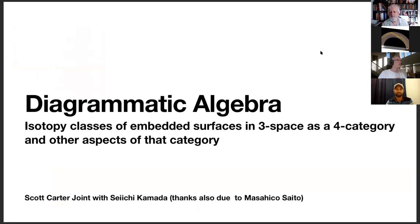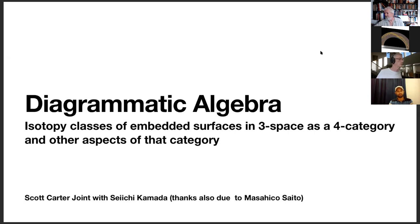Siichi Kamada and I just finished a book. We have sent it to the publisher, and some of you may be reviewers, so please be kind. I'm going to talk about chapters six and seven mostly, with a smattering of chapter eight, and we're going to talk about isotopy classes of embedded surfaces in three-space as a four category.